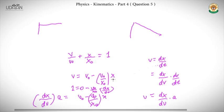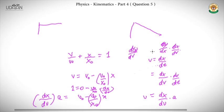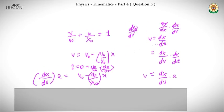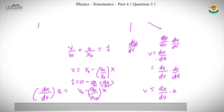To understand why the LHS gives 1: differentiating x with respect to v, we multiply and divide by dx, giving (dx/dx)·(dx/dv) = 1·(dx/dv). This is simply the chain rule. From this we find dx/dv = -x₀/v₀.